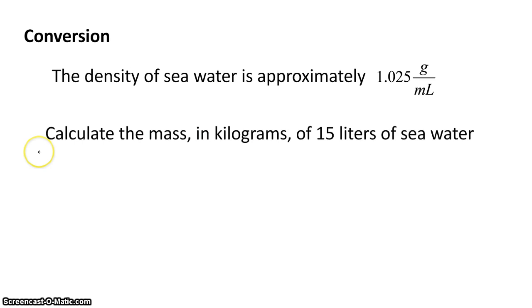Okay, here's another problem. We've got the density of seawater is approximately 1.025 grams per milliliter. We want to calculate the mass in kilograms. So I have to take this 1.025 grams per milliliter and I've got that density in 15 liters of seawater. So I'm going to take that and multiply it by 15 liters.